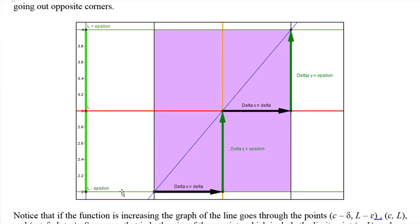And our box goes from L minus epsilon on the bottom to L plus epsilon on the top. On the left it goes from c minus delta on the left to c plus delta on the right, and of course you have c right here in the middle.